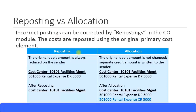Now let's look at the difference between reposting and allocation. In reposting, the original debit amount from the cost center is reduced. For example, in cost center 10101 Facilities Management, you posted a debit entry of $5,000 using GL account 50100, which is also your primary cost element for rental expenses. When you repost it, a credit entry is posted there and that amount disappears from the reports — taken away from that cost center and posted to the correct cost center.